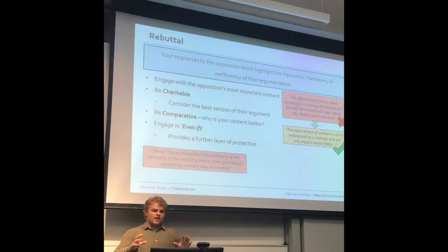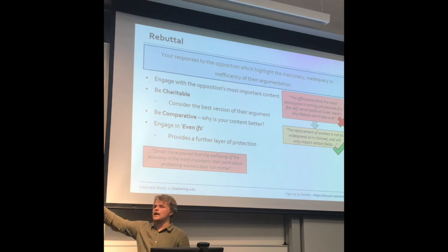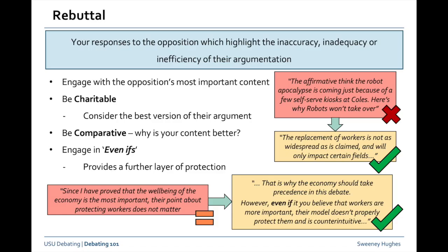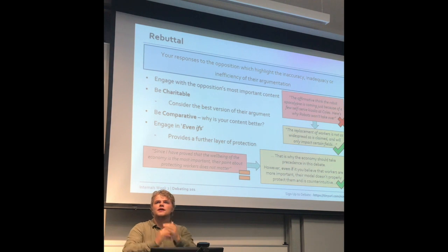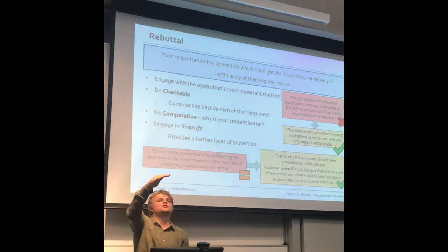You might also say 'since I've proved that the well-being of the economy is most important, their point about protecting workers doesn't matter.' What's wrong with that? It doesn't show the comparison, and it doesn't engage with an even-if. If you just don't engage with the argument about protecting workers because you think the economy is more important, that is probably a fatal failing. It's better to say 'the economy should take precedence in this debate, but even if you think protecting workers is most important, their model doesn't properly protect workers for X, Y, Z reason.' That gives you a second layer of protection against their argumentation.